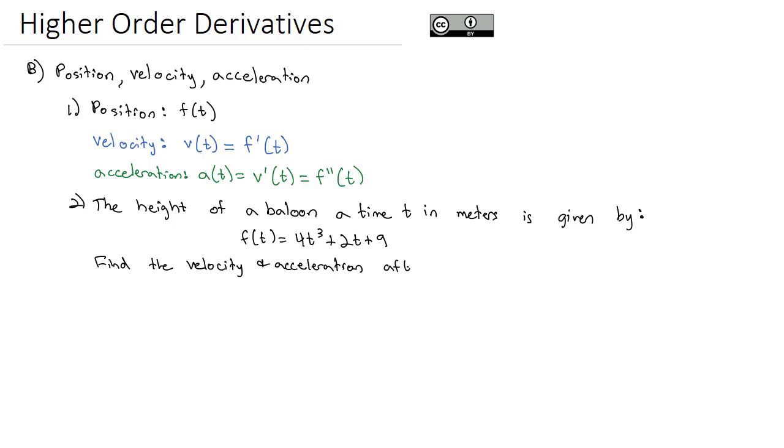after 2 seconds. Because we know if we want the velocity, that's just going to be the derivative of the function f of t. We can find the derivative of f of t really quickly using our power rule, giving us 12t squared plus 2. That is the velocity formula.